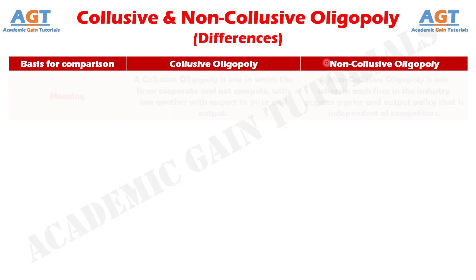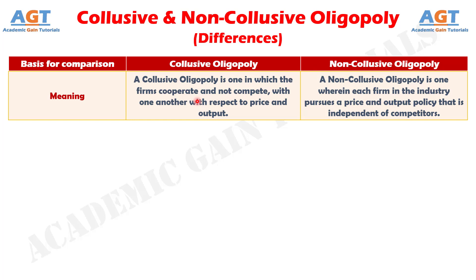Difference No. 1: Collusive oligopoly can be defined as the form of oligopoly wherein the sellers eliminate competition by way of a formal or informal agreement. Whereas, a non-collusive oligopoly is one in which each firm sets its own price and level of output and competes in the market.